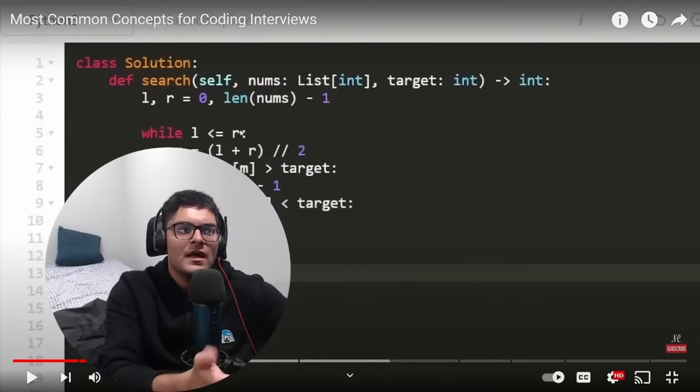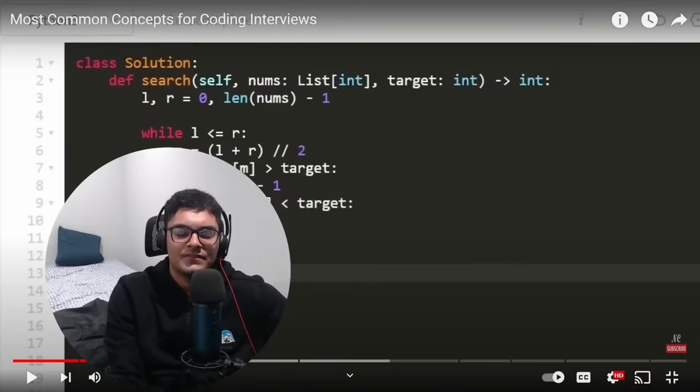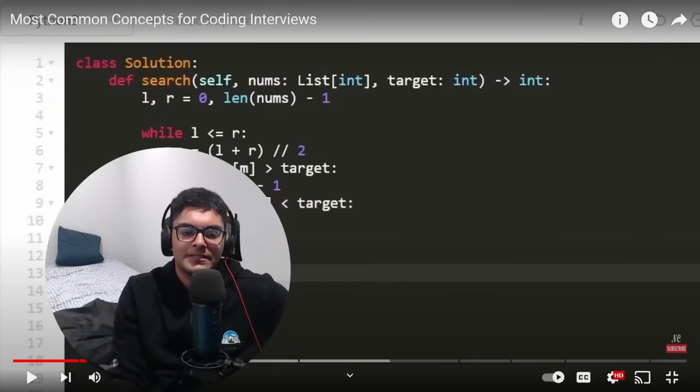Why not just solve a really simple binary search or sliding window problem five times? Because it's not going to take you very long. If you solve it the first time in 15, 20 minutes, solve it again the next day. It'll probably take you 10 minutes. Solve it again the next day. It'll probably take you like five minutes and you'll get so good.